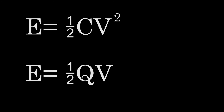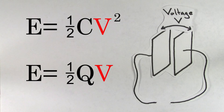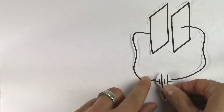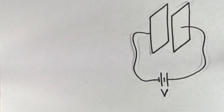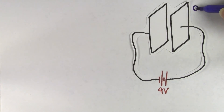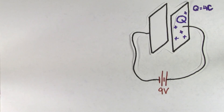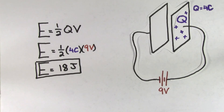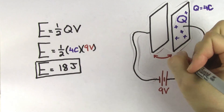So these are the two formulas for the energy stored in a capacitor, but you have to be careful. The voltage V in these formulas refers to the voltage across the capacitor — it's not necessarily the voltage of the battery in the problem. If you're just looking at the simplest case of one battery that has fully charged up a single capacitor, then the voltage across the capacitor will be the same as the voltage of the battery. So if a 9-volt battery has charged up a capacitor to a maximum charge of 4 coulombs, then the energy stored by the capacitor is going to be 18 joules.